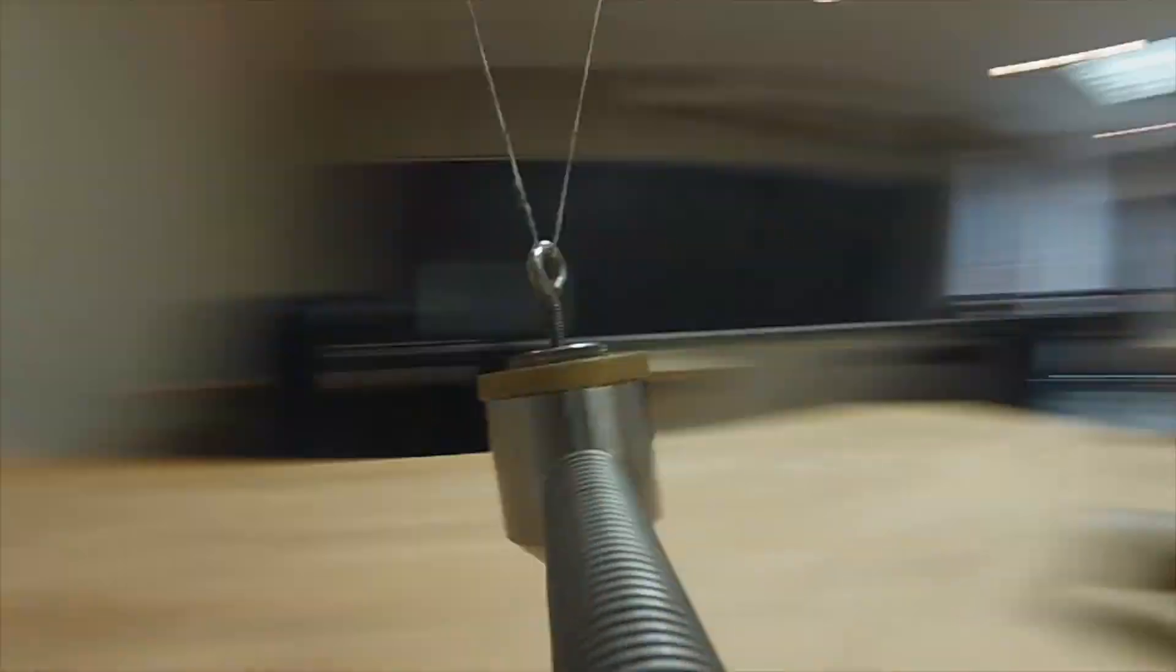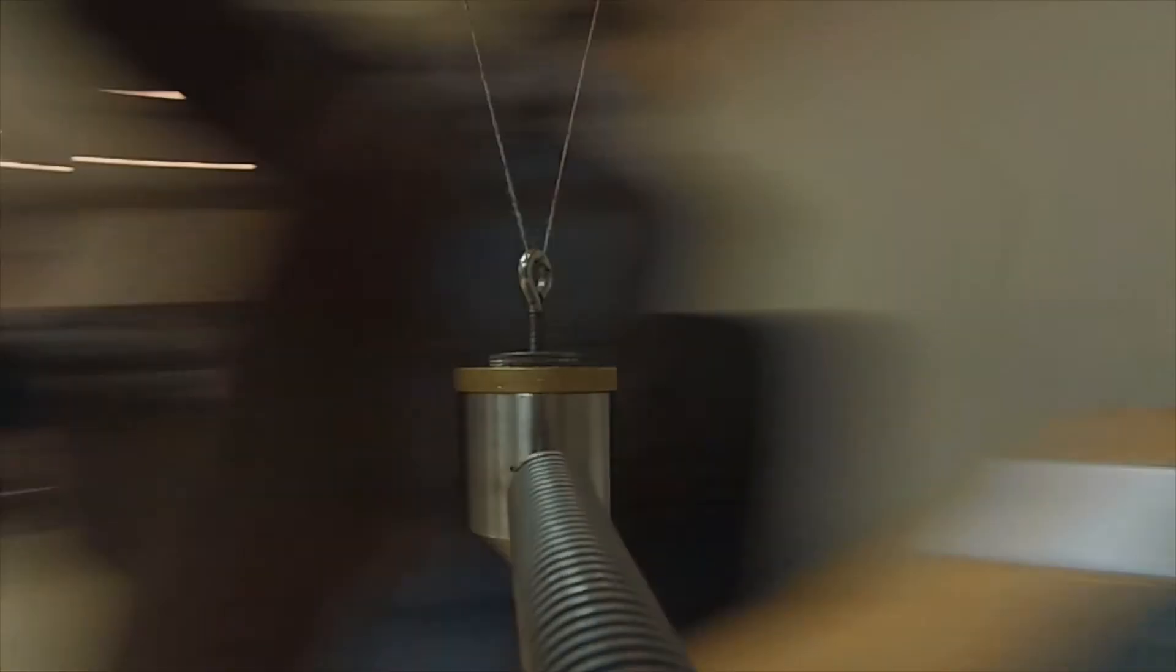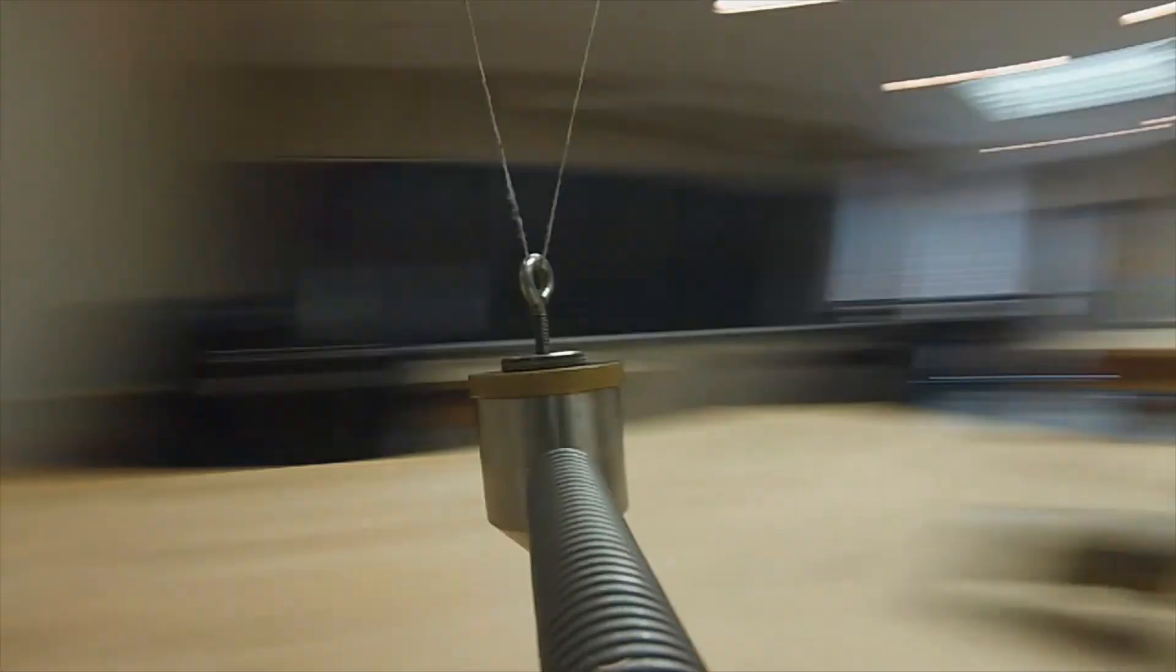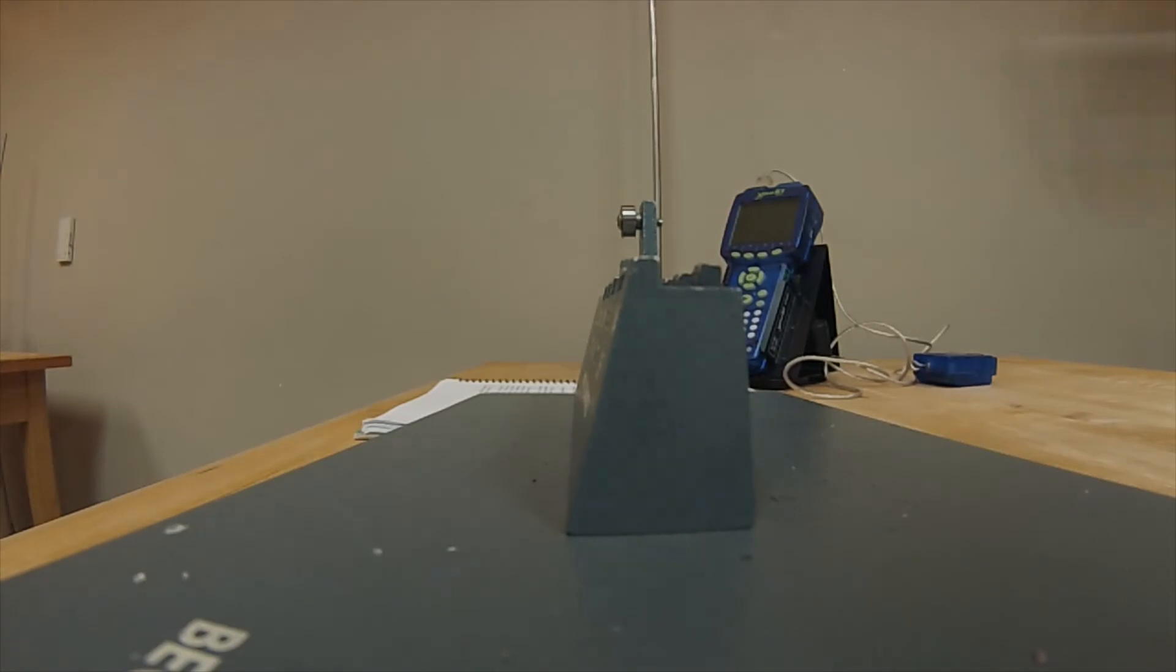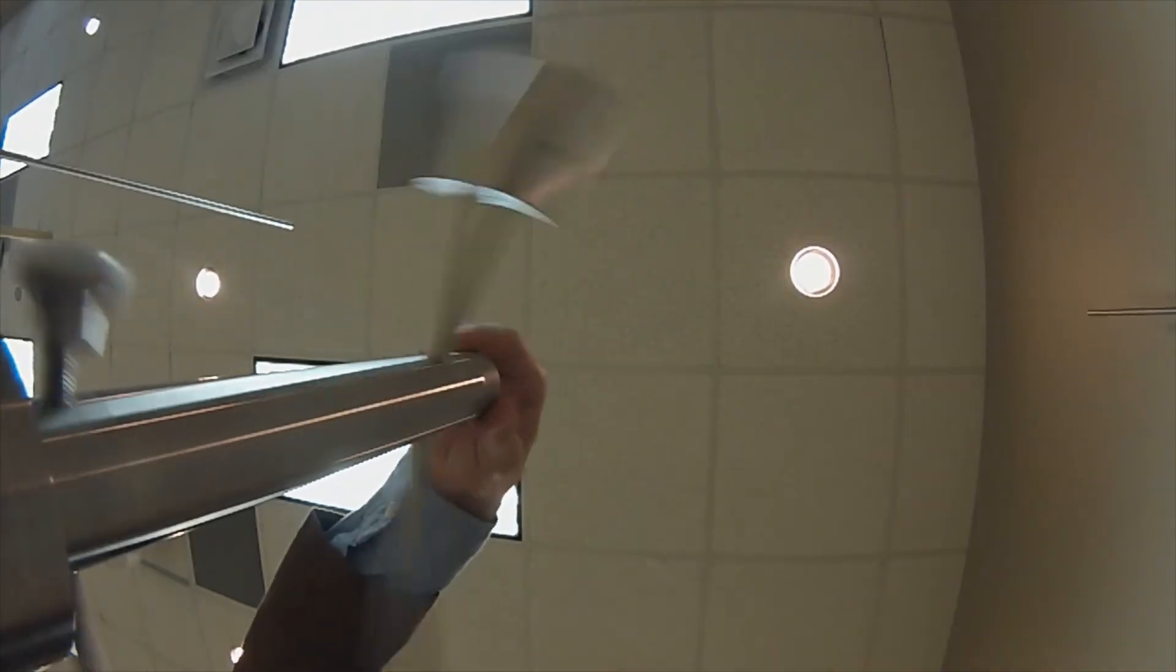You will then repeat the previous process by rotating the centripetal force apparatus to align the tip of the bob with the same previously determined radial marker. Also, just as before, you will need to measure the time for the apparatus to complete 30 revolutions, and you will do so three times to determine a more accurate averaged value.